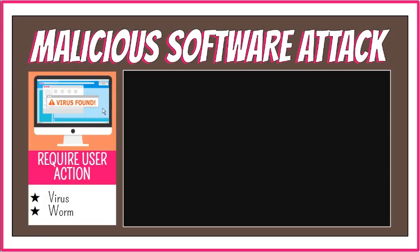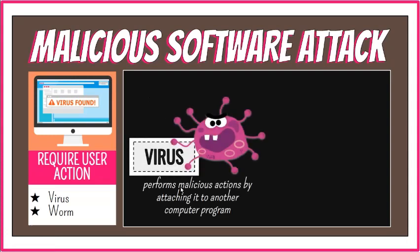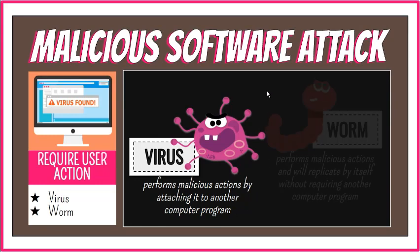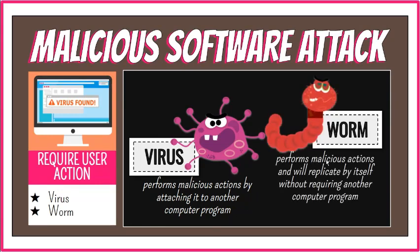Virus and worm are examples of remote attacks requiring user action. A virus is a segment of computer code that performs malicious actions by attaching itself to another computer program. A worm is a segment of computer code that performs malicious actions and will replicate or spread by itself without requiring another computer program.